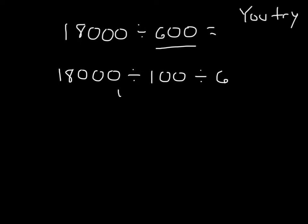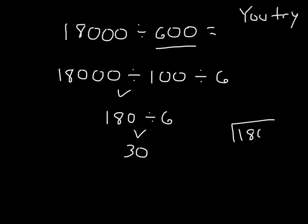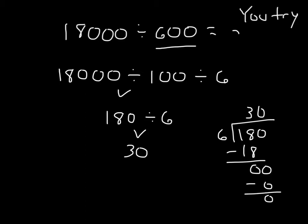18,000 divided by 100 is 180, and then we'd have 180 divided by 6, which is 30, because 30 times 6 is 180. You could use the standard algorithm at this point when you have a single digit to check that work. So 18,000 divided by 600 is 30.